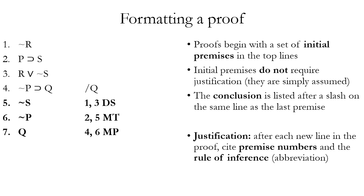Let's talk about the formatting of a proof by natural deduction. Proofs begin with a set of initial premises shown in non-bolded text to differentiate them from proof steps. Initial premises do not require justification — they are given assumptions. The conclusion is listed after a slash on the same line as the last premise. When we begin the proof, all we're given are the top lines — the non-bold ones — and then we figure out how to prove that Q must be true assuming those premises.